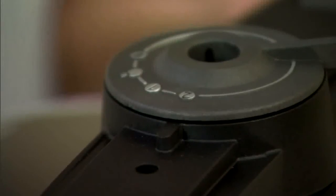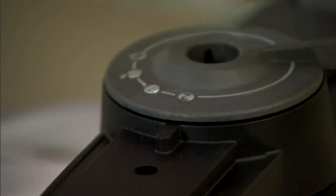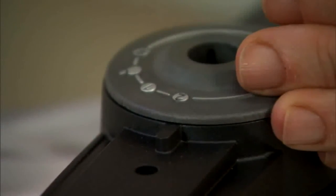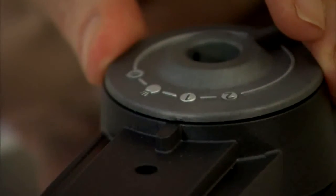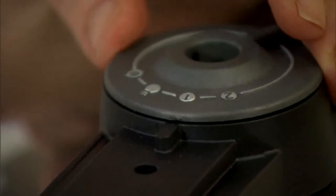With this model, we have two different pressure settings: High, number two, which is the fastest, and one, which is a medium setting for cooking delicate foods like fish and vegetables.